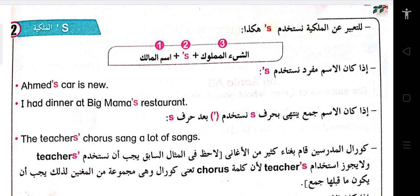الملكية لها أربع أشكال. الشكل الأول: إذا كان المالك مفرد، فإننا نضع apostrophe S. Like: Ahmed's car is new. Another example: I had dinner at Big Mama's restaurant.